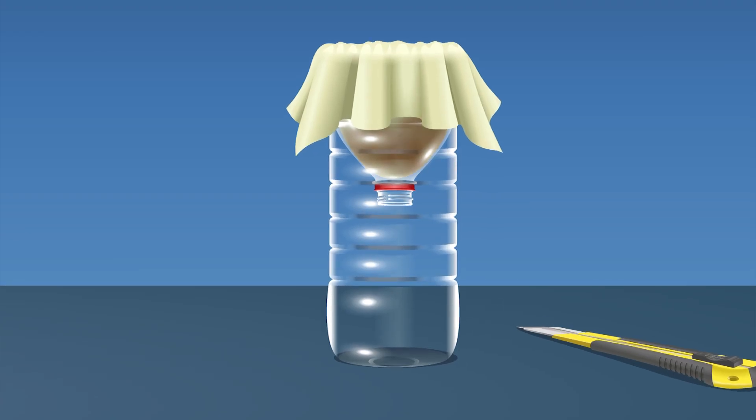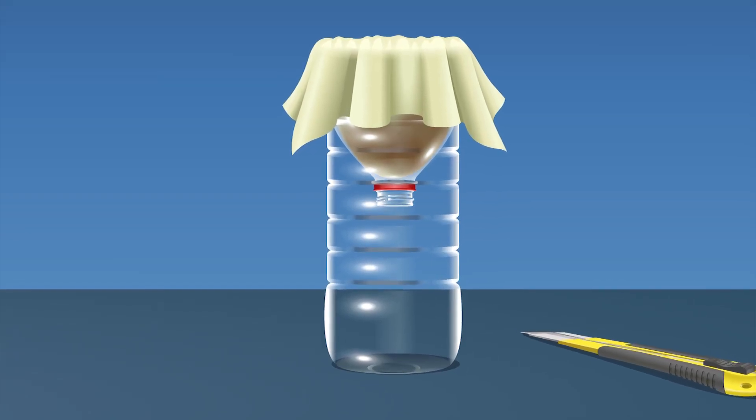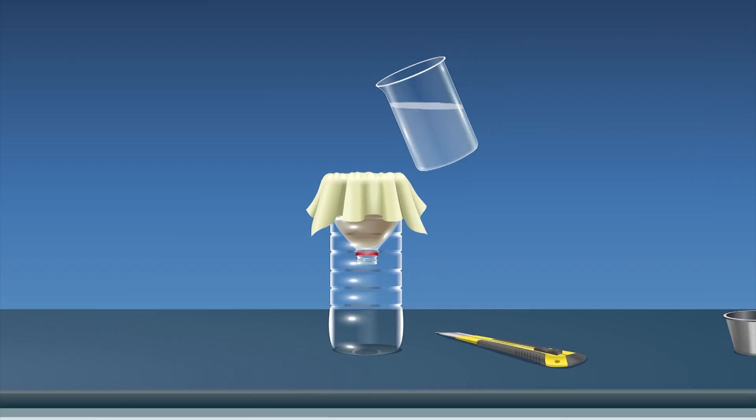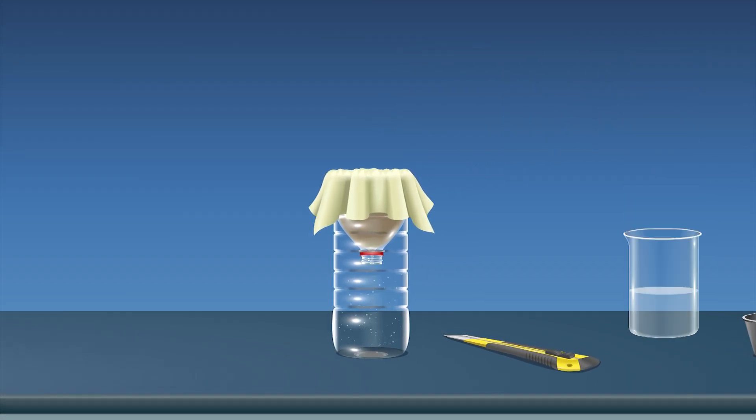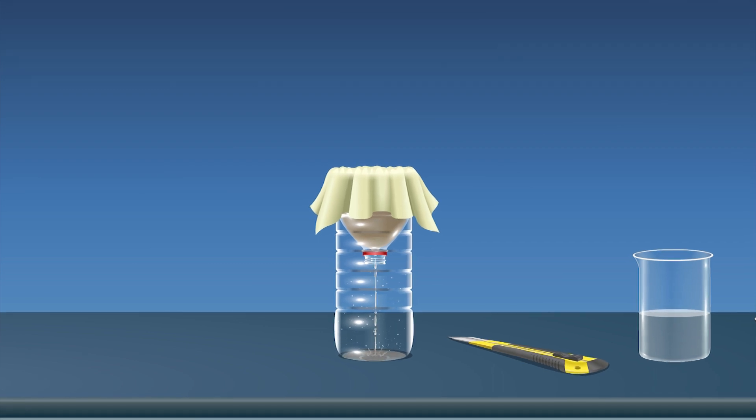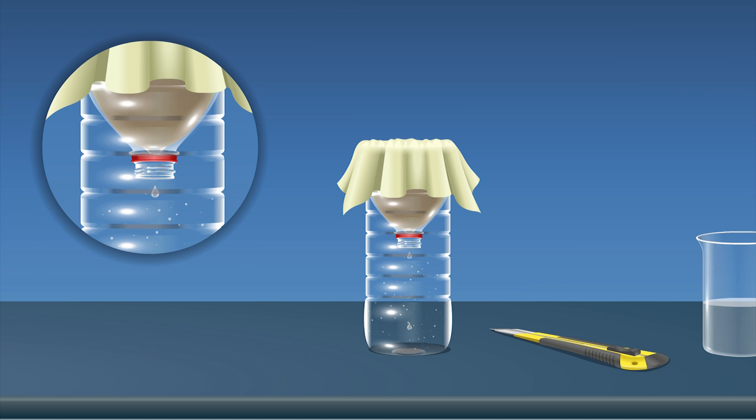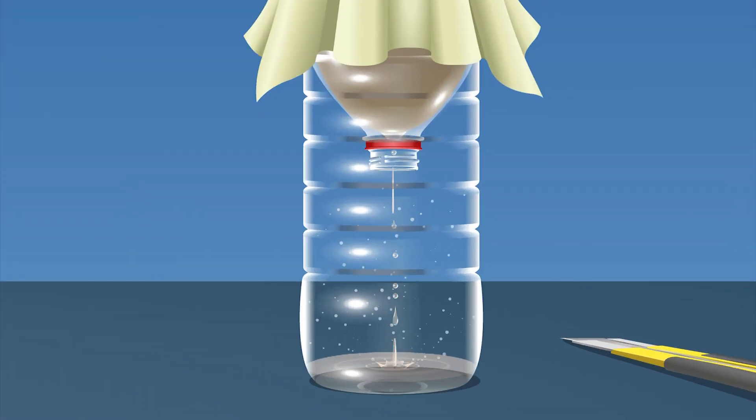Check if some water drops are trickling down. If not, pour some more water on the soil surface till water starts trickling down. Observations: We can see that the water which was poured over the soil has percolated through the soil and a part of it gets collected in the container.